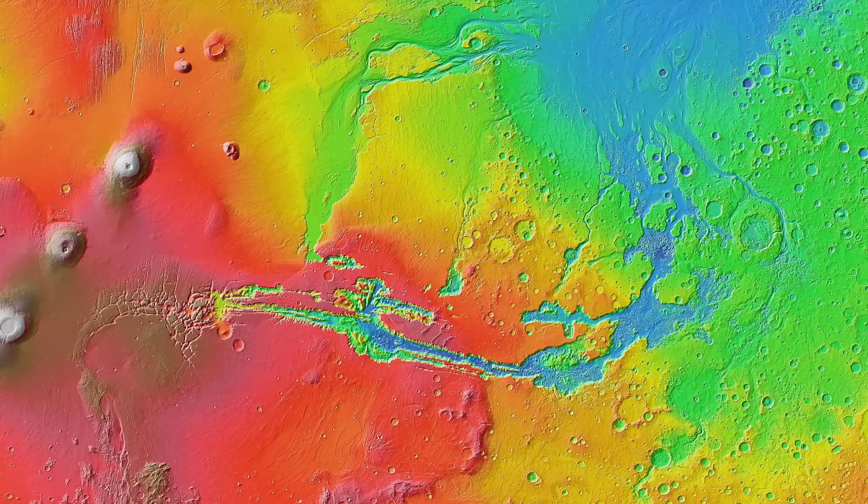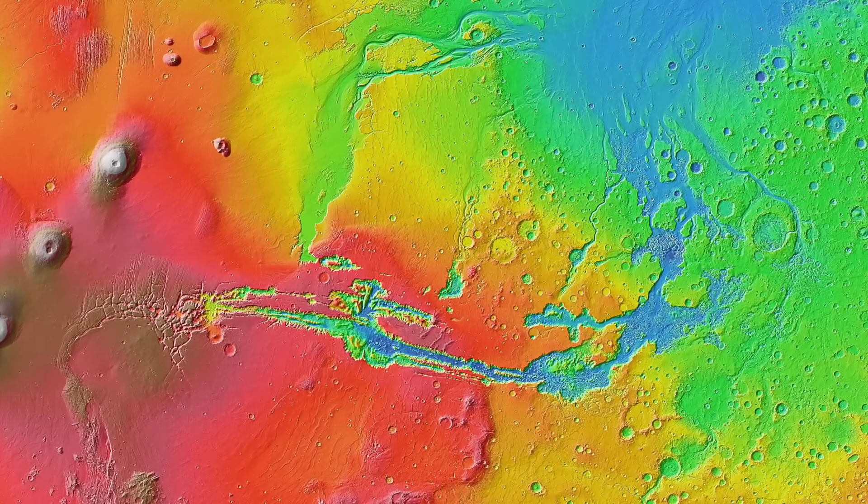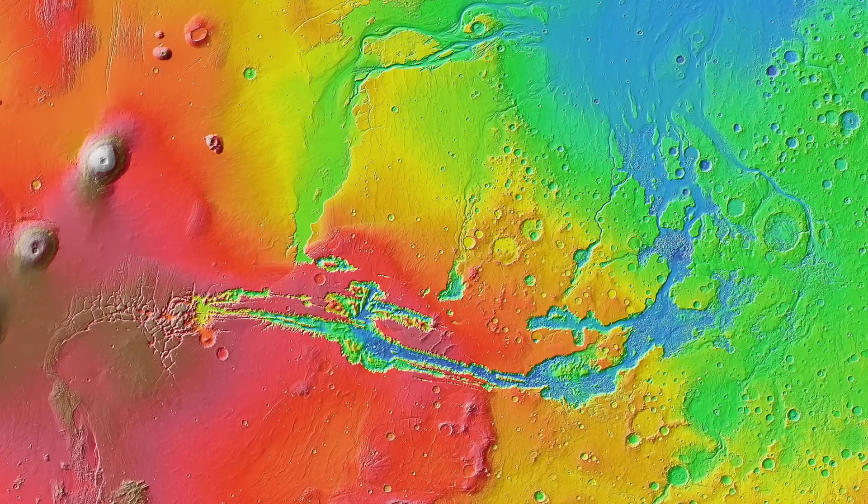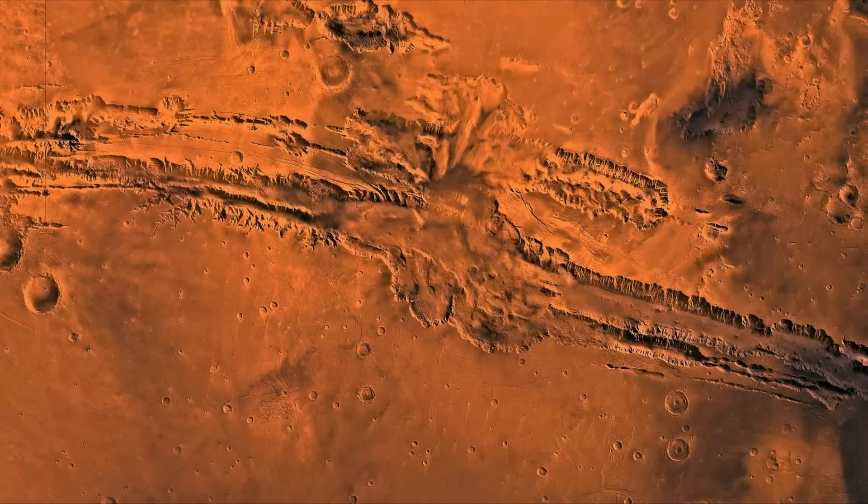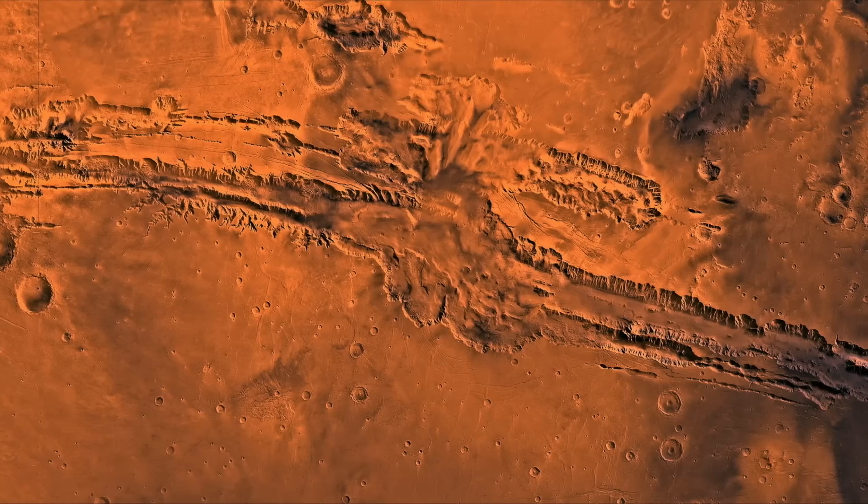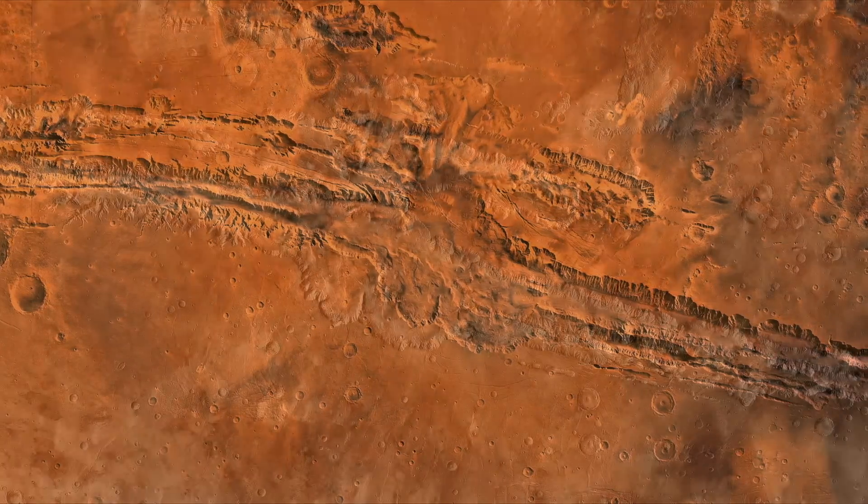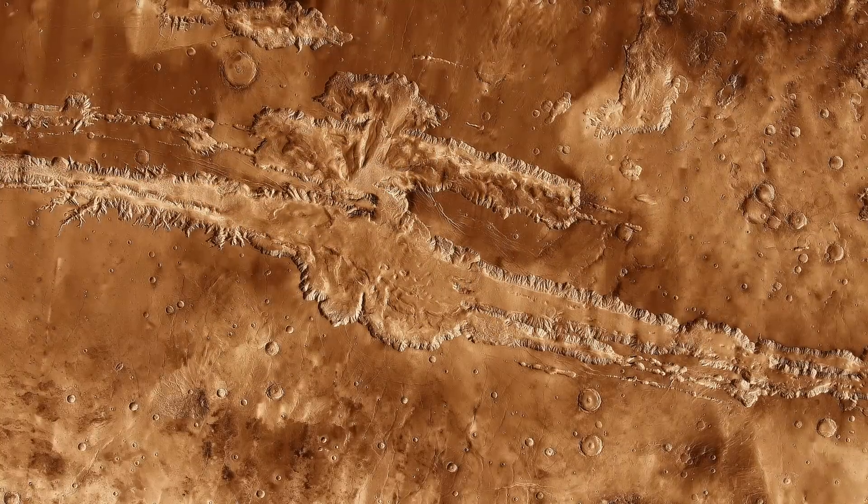This discovery is unexpected, as the pressure and temperature around the Mars equator does not create a suitable environment for large stores of water. The presence of water in Valles Marineris suggests unusual conditions, possibly relating to the angle of its slopes. The water may also be sitting in scattered ancient deposits.